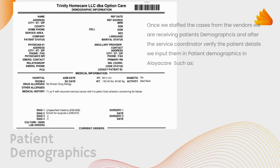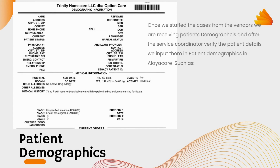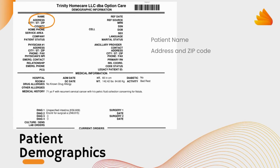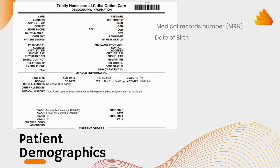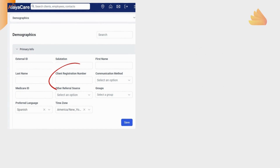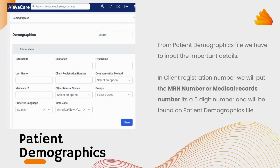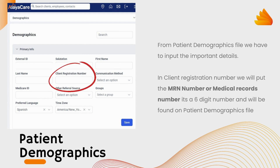Once we staff the cases from the vendors, we are receiving patients' demographics, and after the service coordinator verifies the patient details, we input them in patient demographics in AleaCare — such as patient name, address and zip code, phone number, medical records number, and date of birth. In the client registration number field, we will put the MRN number, or medical records number. It's a six-digit number and will be found on the patient demographics file.